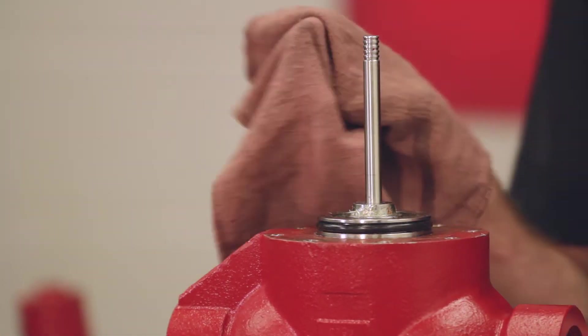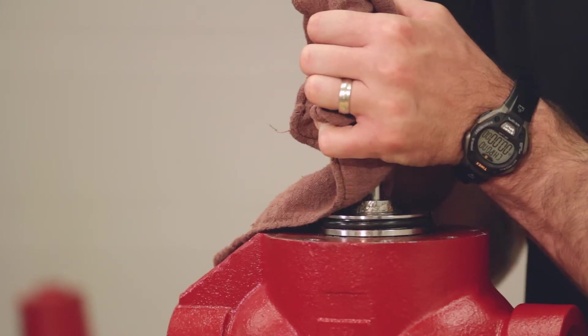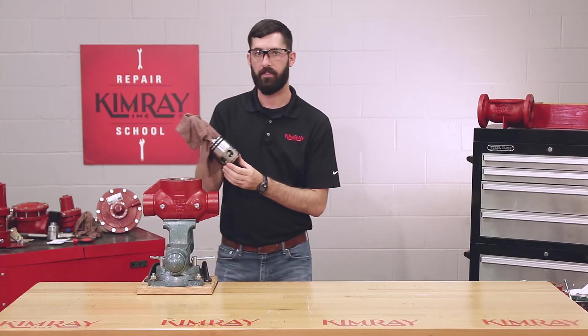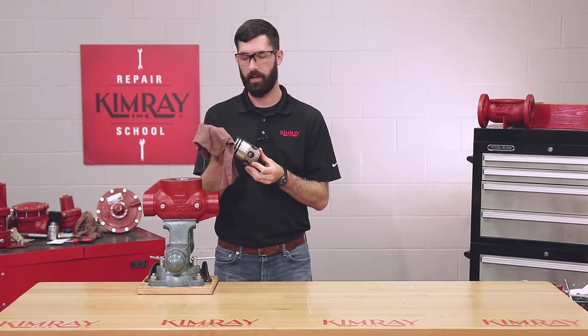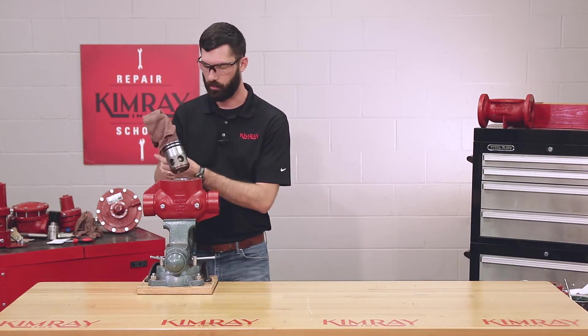Now you can remove your cage and piston assembly from your body by pulling up on the stem. If it doesn't come out this easily by hand, you'll have to use your custom Kimray cage puller. I'll put it back in the body to show you how that tool works.